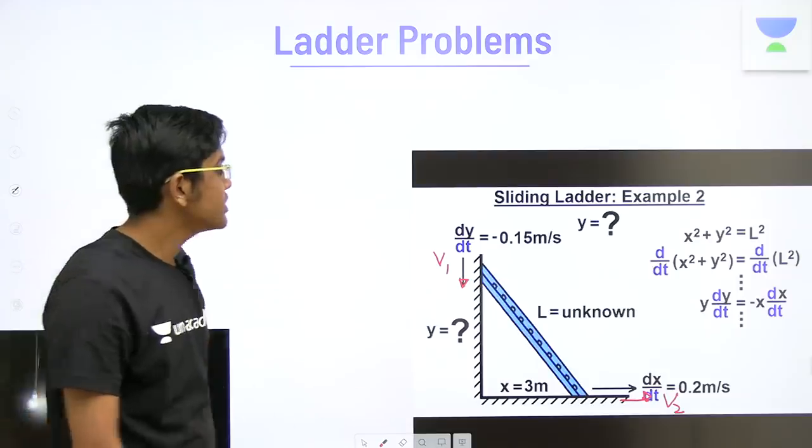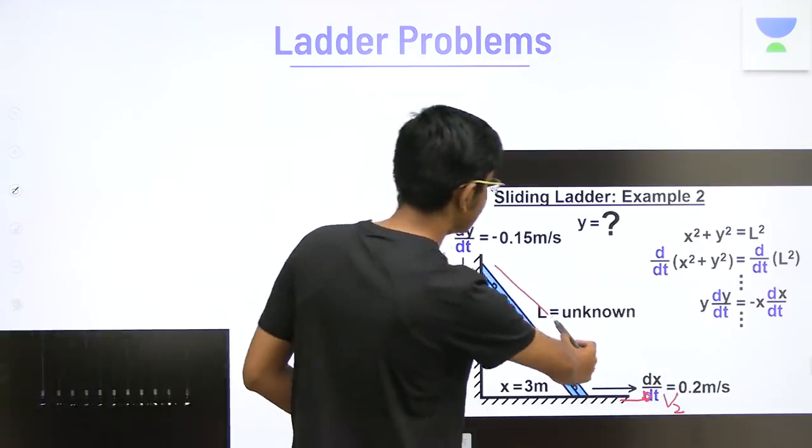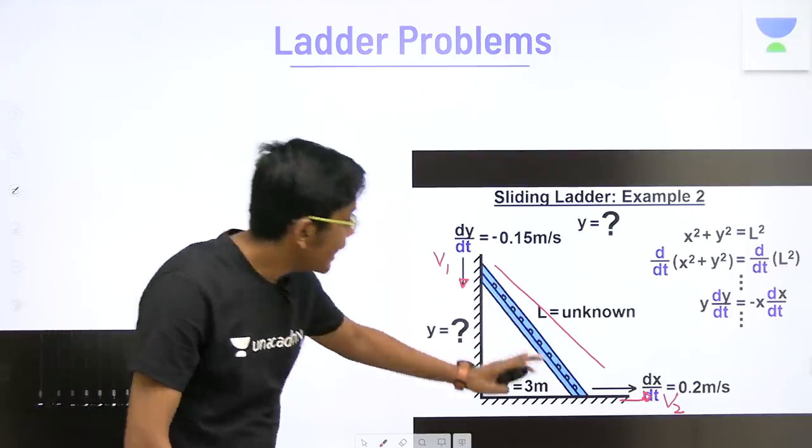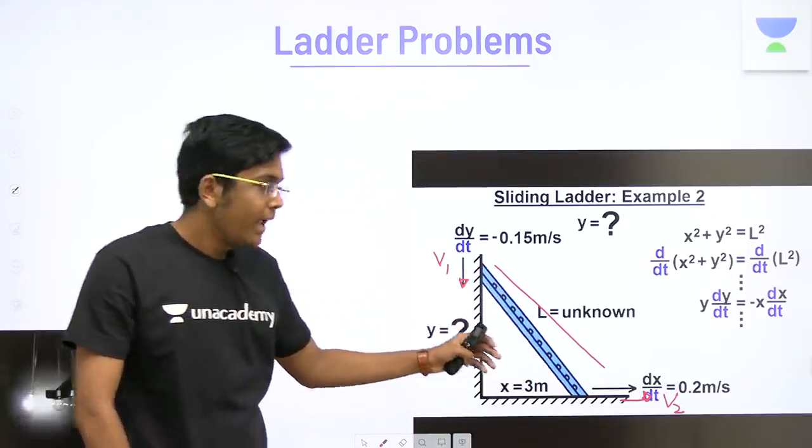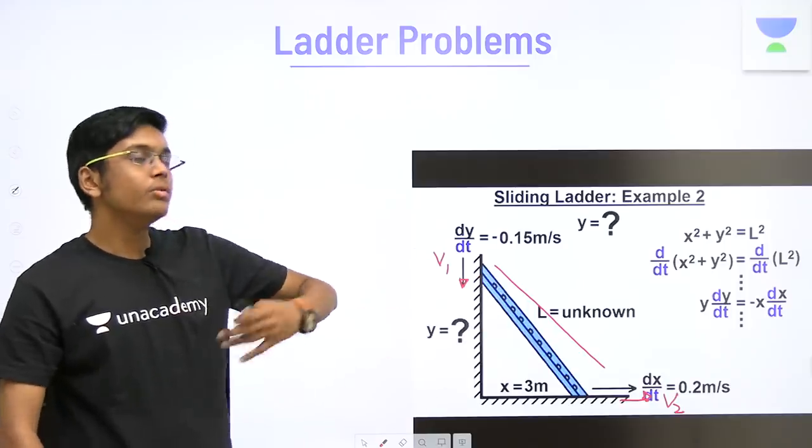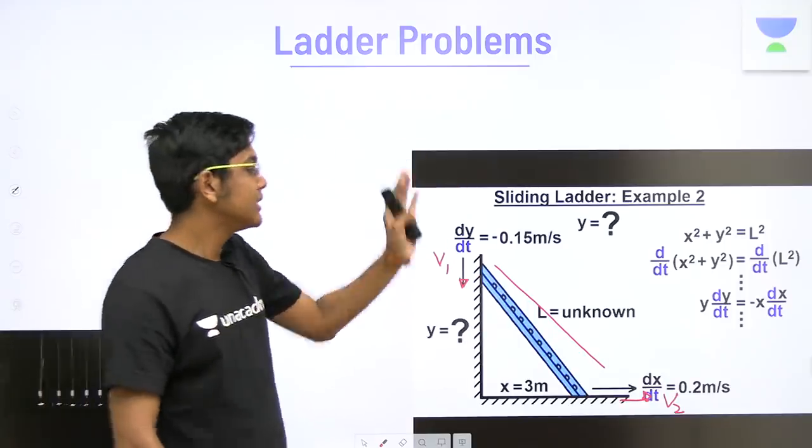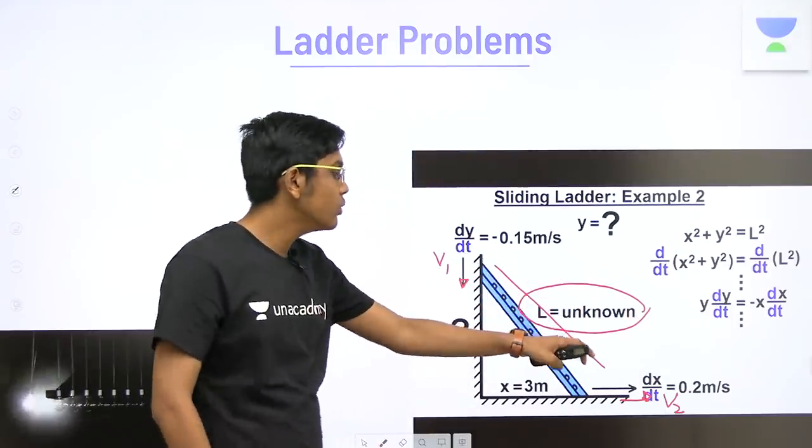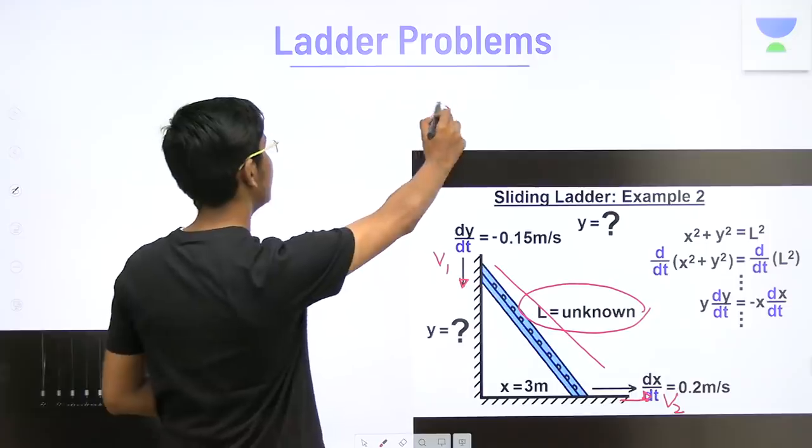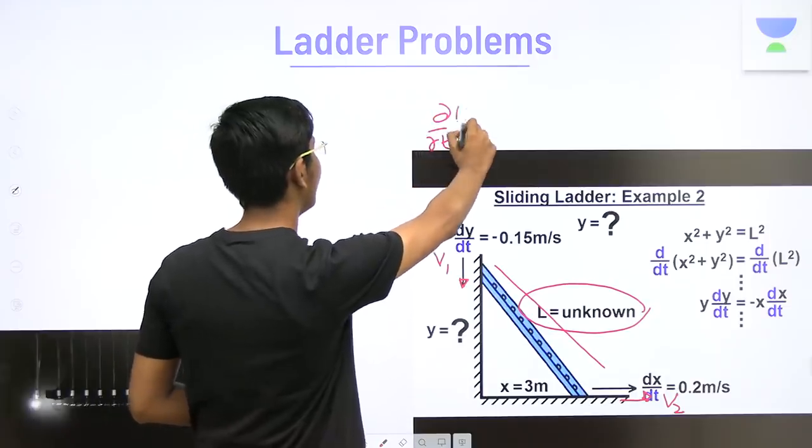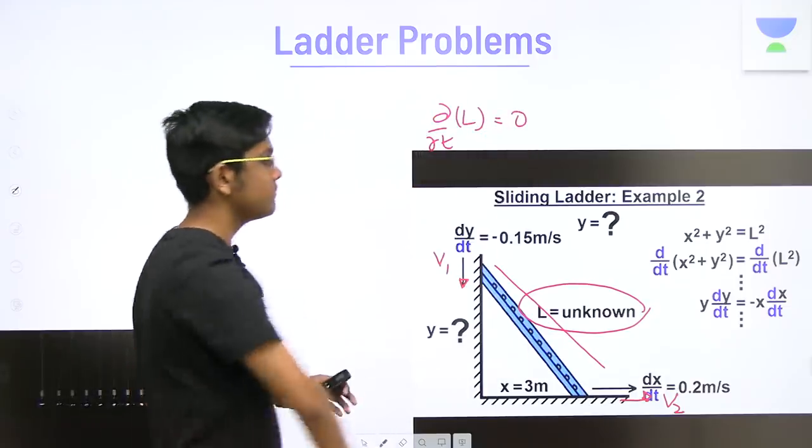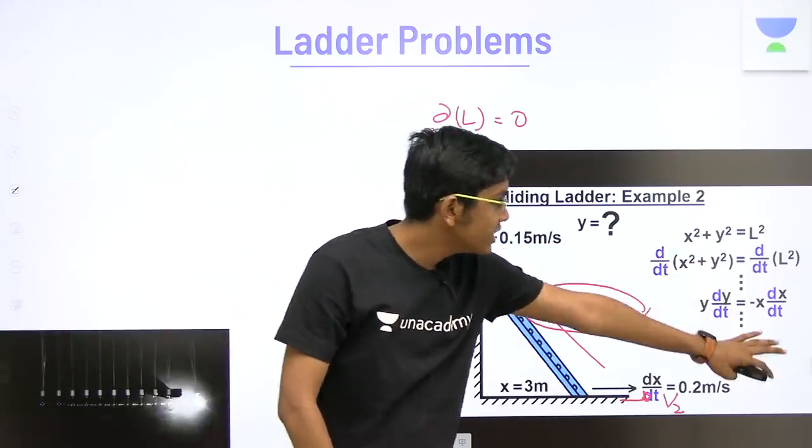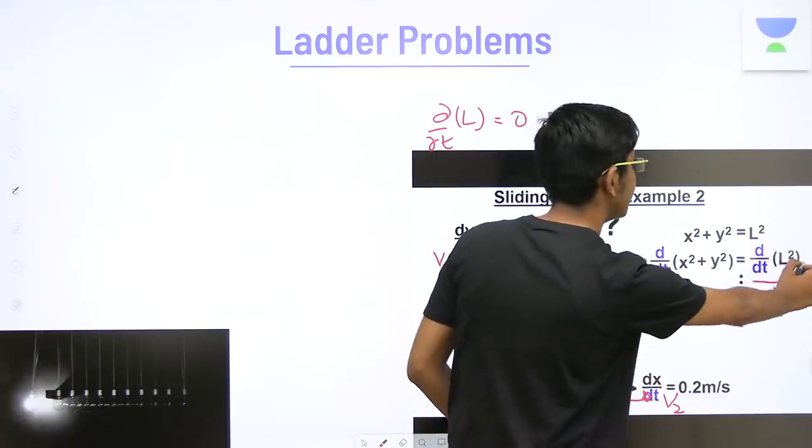The general approach is that you know that l is constant because that's the length of the ladder. So, you write x and y in terms of l, and then differentiate it. Why do we differentiate it? The thing is one side of the equation when we differentiate is going to be zero because we know that l is constant. Thereby, d by dt of l is zero.